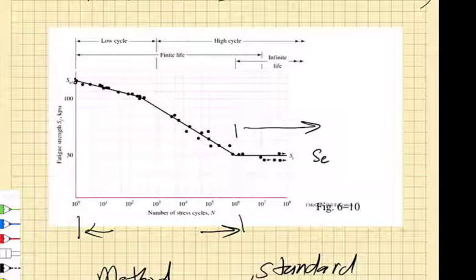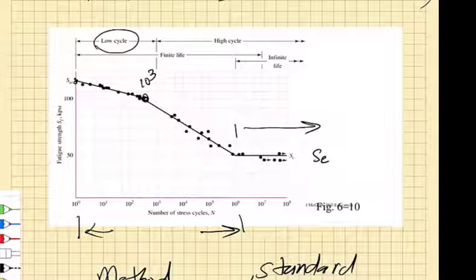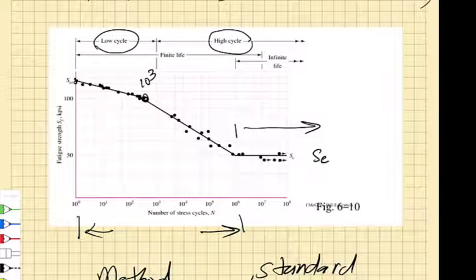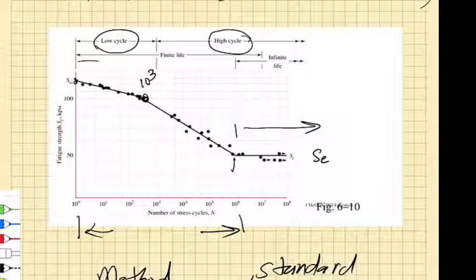Ultimate strength is important. This turnover around 10 to the 3rd cycles is important, and that 10 to the 3rd cycles partitions the low cycle fatigue regime from the high cycle fatigue regime. All of this stuff below 10 to the 6th is the finite life regime, and beyond that we have infinite life.